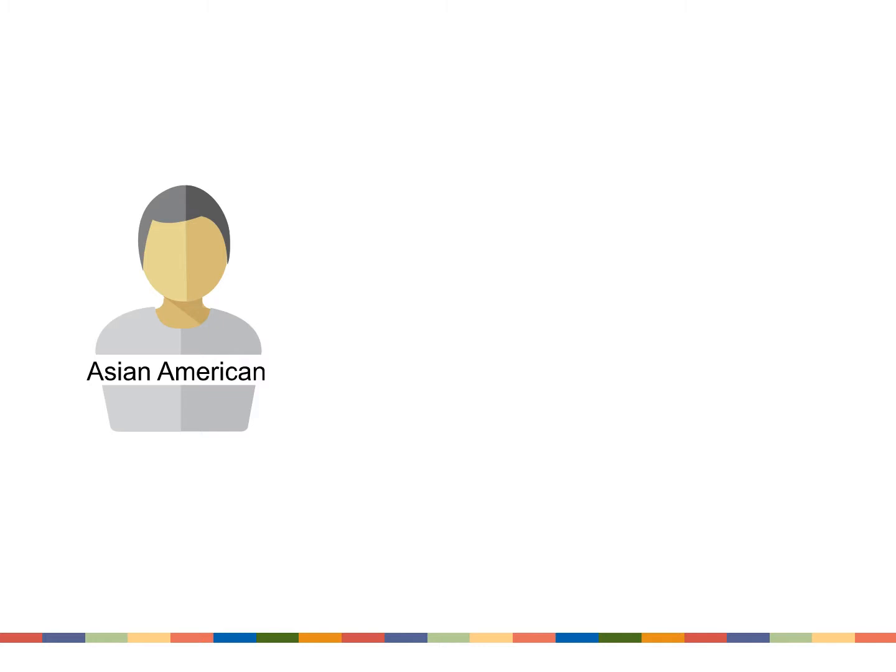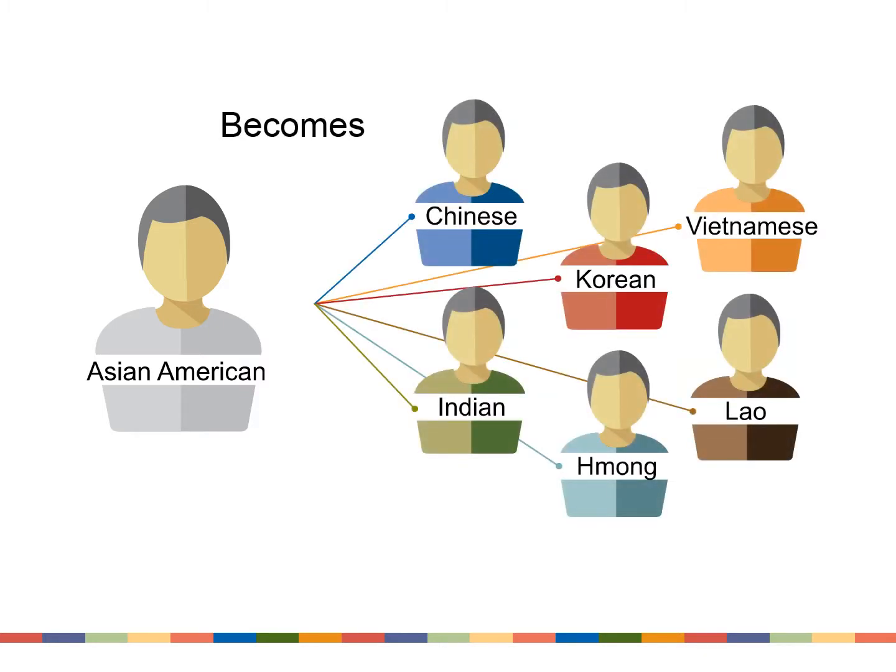Data disaggregation by race and ethnicity means two things. First, it could mean breaking out broad race categories into more specific ethnic or cultural groups. So Asian American could become Hmong, Vietnamese, Lao, Chinese, Korean, and so on. The same thing for American Indian, which could become Ojibwe, Lakota, Dakota, Ho-Chunk, and so on. You could break out any of the five major race or ethnic groups that are used by the U.S. Census Bureau in this same way.